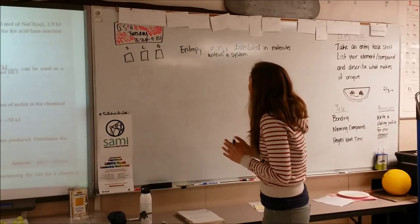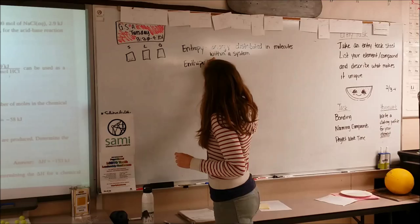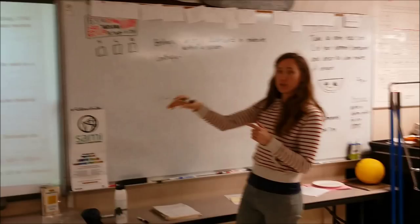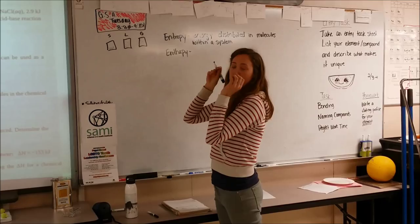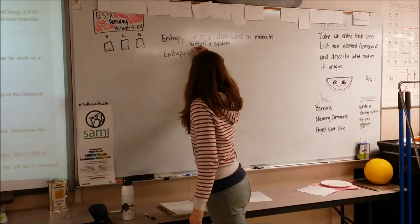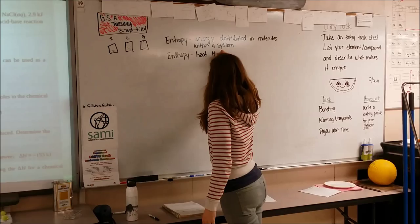Now we get to the fun, confusing stuff. Enthalpy — this is with the T, H, N, and A. Enthalpy is the heat that either enters or leaves the system. Whenever we mix two reactants together, some energy either entered that system or was removed from that system, and that is enthalpy. So we're going to call it heat, although it could be energy — that's what we were measuring.